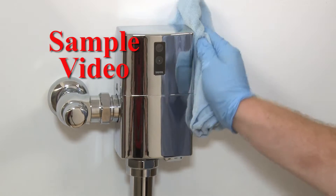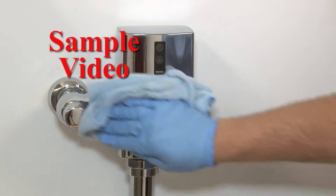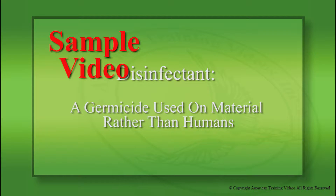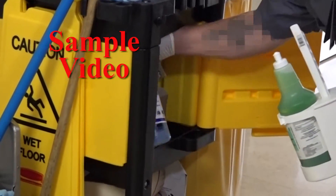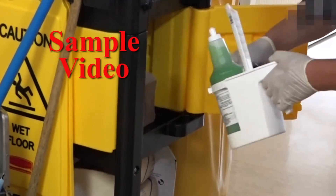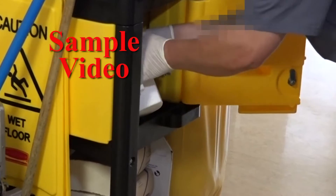That's why your cleaning has to be extremely thorough. A disinfectant is a germicide that is used on material rather than humans. The word disinfectant and germicide mean the same thing. Disinfection describes a process that eliminates many or all pathogenic microorganisms except bacterial spores on inanimate objects. Environmental service personnel can only use EPA-registered, hospital-grade disinfectants.